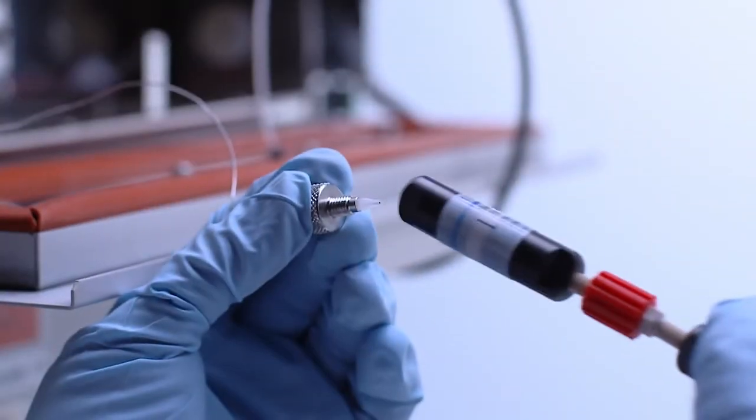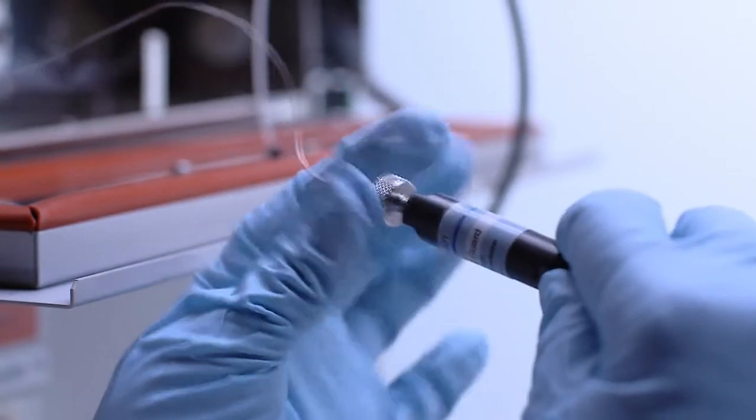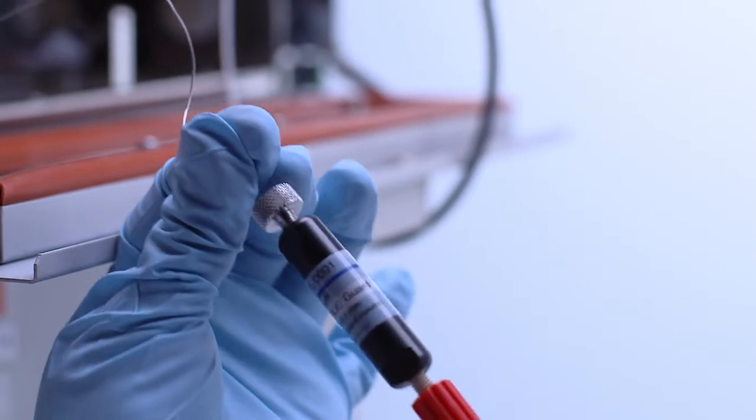The connection of a column together with a guard column to the HPLC instrument follows exactly the same rules as described already for columns without guard columns. There is no difference.